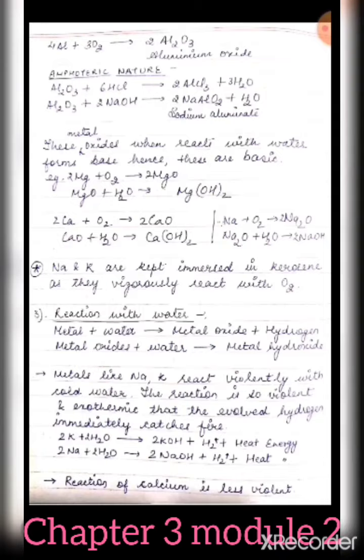An important note: sodium and potassium are kept immersed in kerosene oil because they vigorously react not only with oxygen but also with moisture present in the atmosphere. The oil forms a layer that prevents reaction of these metals with oxygen and moisture. If exposed to oxygen, moisture, acids, or bases, they can catch fire or burn.